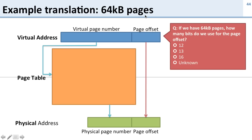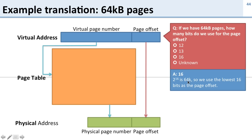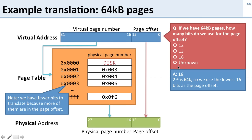Now let's take a look at 64 kilobyte pages. If we have 64 kilobyte pages instead of 4 kilobyte pages, how many bits do we need for the page offset? We need 16, because 2 to the 16 is 64K. So we use the lowest 16 bits — bits 15 through 0 — for the page offset, and the remaining 16 bits become the virtual page number. The page offset for the physical address is now also 16 bits, leaving even fewer bits for the physical page number. By making pages larger, we have fewer entries in our page table — indexed by just 16 bits instead of 20 — making the page table much, much smaller, but we have to deal with data in larger 64 kilobyte chunks instead of 4 kilobyte chunks.